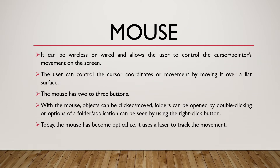Mouse. The mouse can be wireless or wired and allows the user to control the cursor or pointer movement on the screen. The user can control the mouse coordinate or movement by moving it over a flat surface. The mouse has two to three buttons. Objects can be clicked or moved. Folders can be opened by double-clicking. Options of the folder can be seen by using the right-click button. Today the mouse has become optical, using a laser to track the movement.